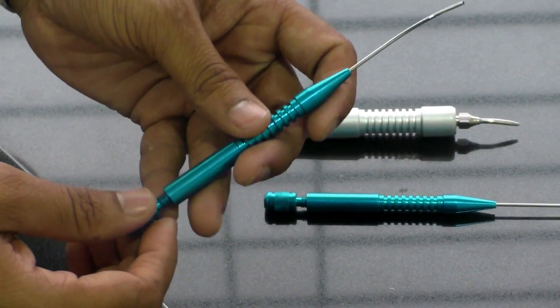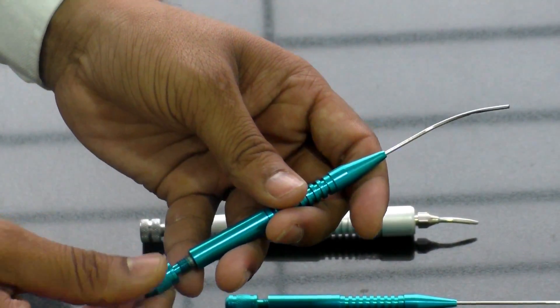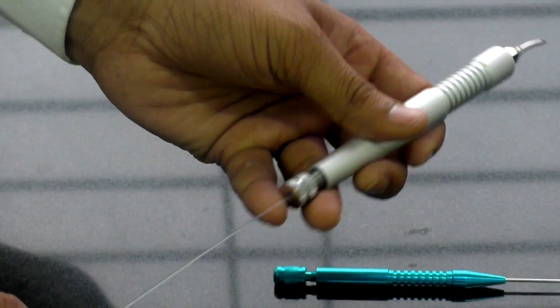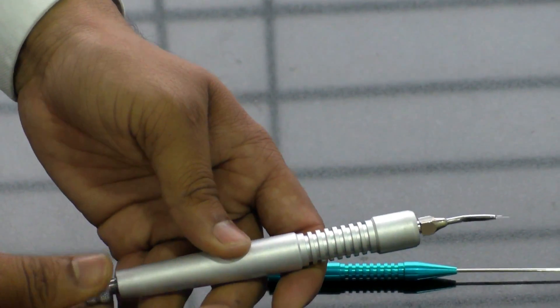So what we usually do is, we usually take out the screw for around 70% and we will be penetrating through these holes which are made and this fiber is ready to be used.